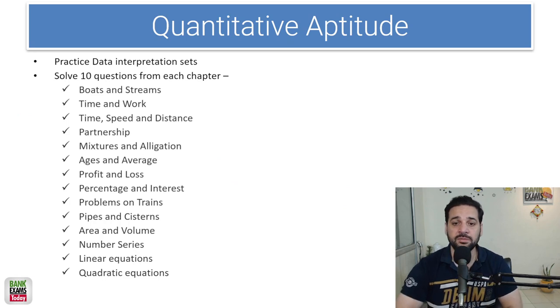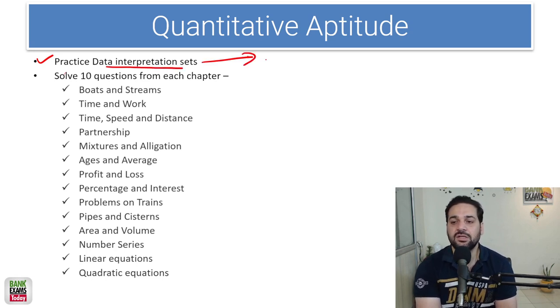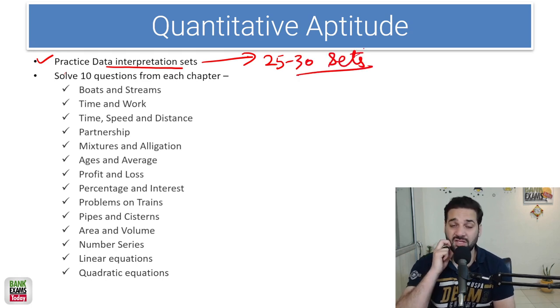Let's move forward with the quantitative aptitude, iski taiyari kaise karna hai. Start with the data interpretation set. See students, practice at least 25 to 30 sets, variety of sets you should practice.